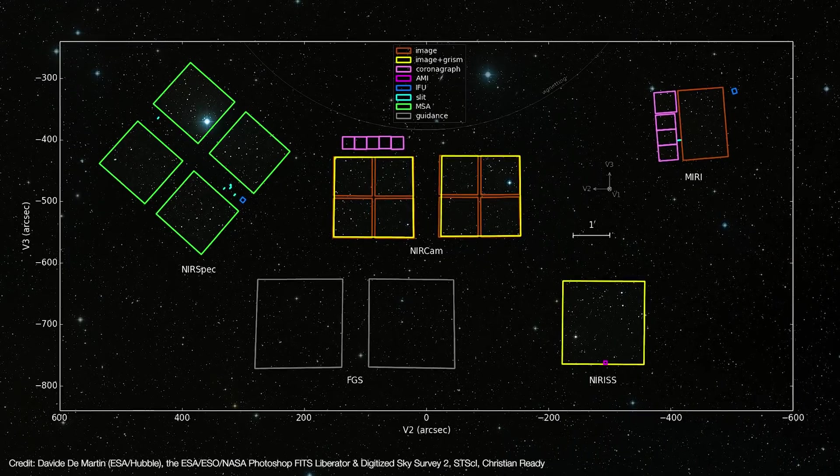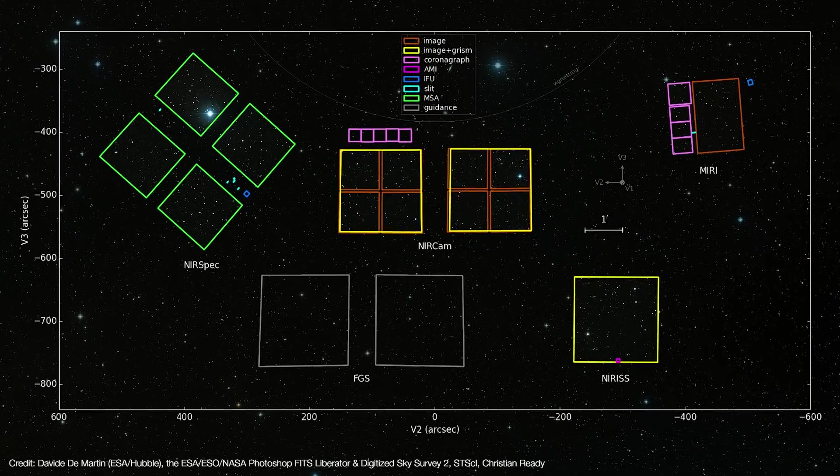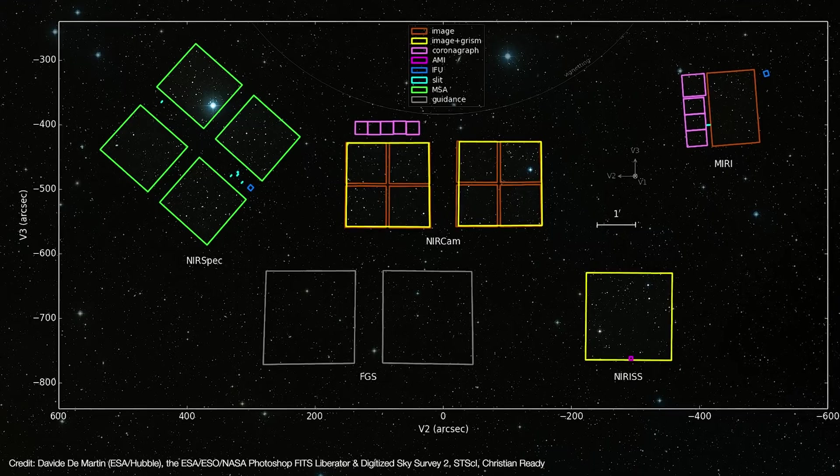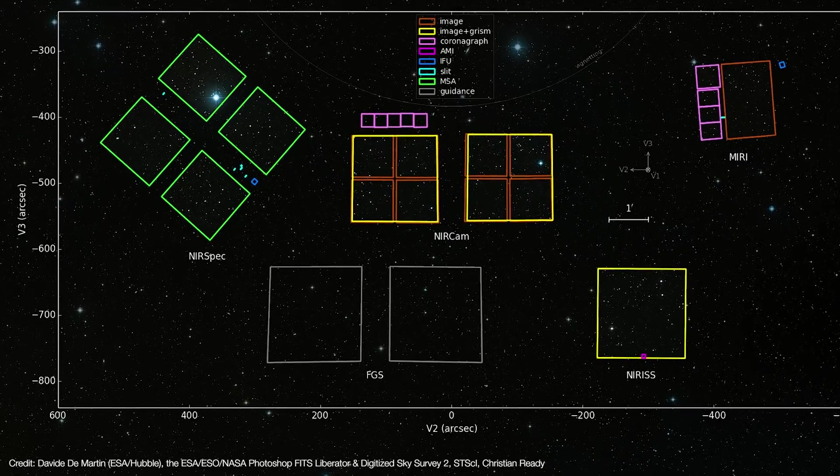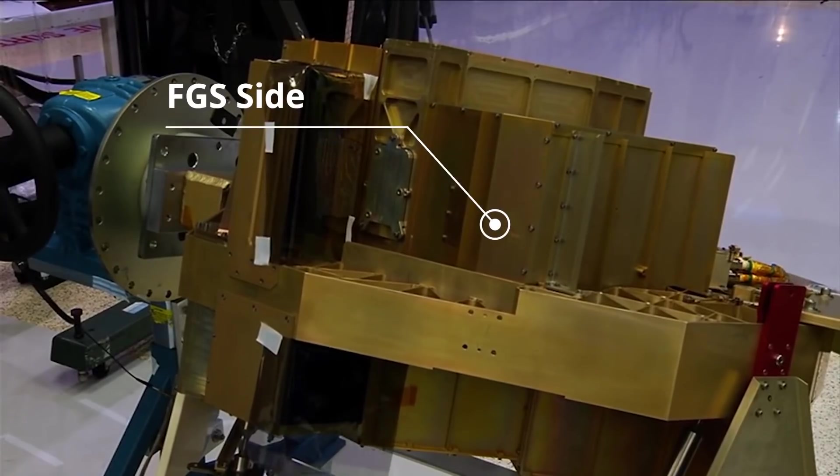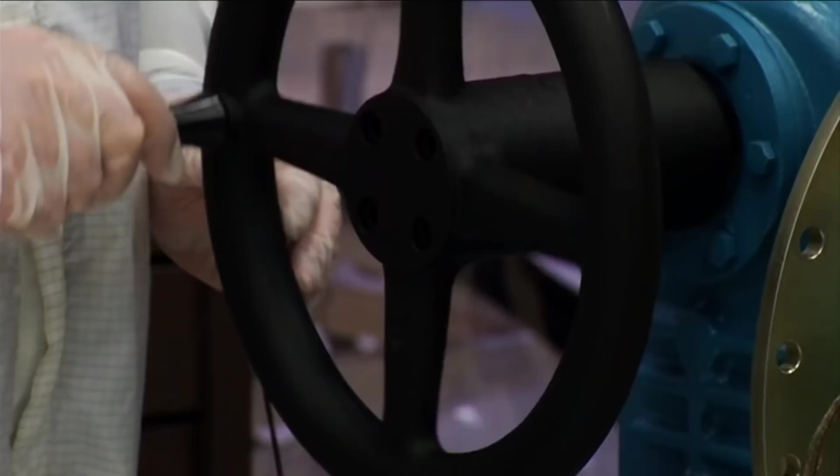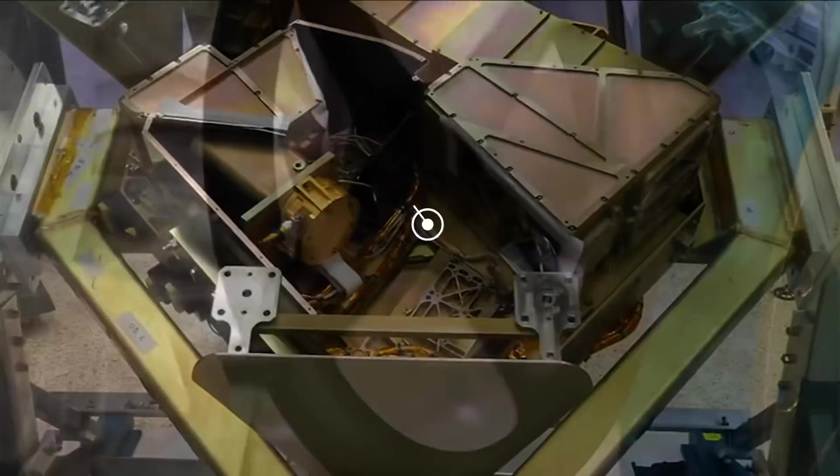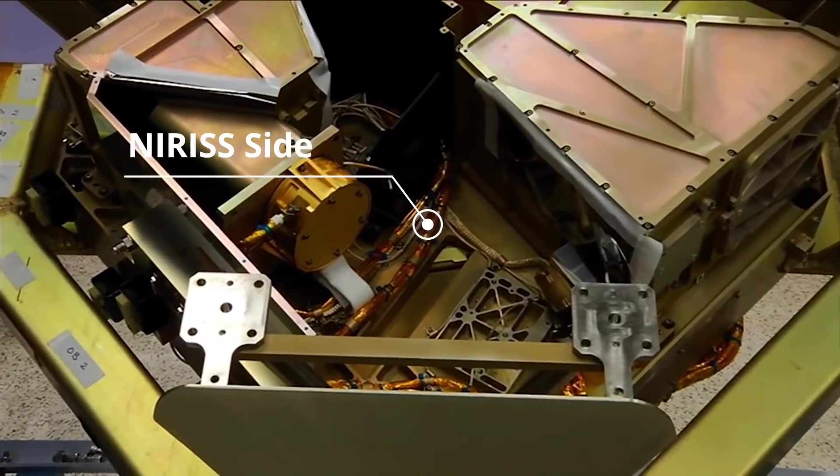FGS, as they're called, is a pair of cameras that Webb uses to lock onto guide stars so the telescope can track its science target. That means the FGS are not available for science, at least for the time being. But the NIRISS side is very much a science instrument.